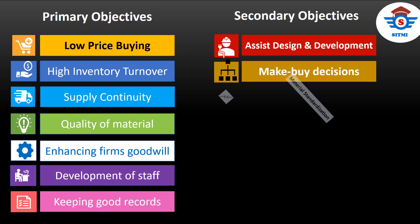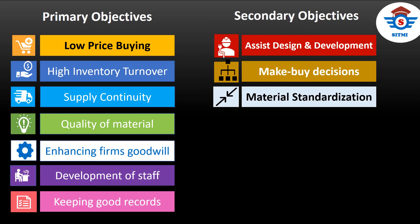An important secondary objective is to ensure material standardization. Manufacturing organizations deal with multiple parts — sometimes parts with very similar specifications differ due to features like design, color, or material, and standardization fails. Even where different part numbers are necessary, there is always scope for standardization and simplification through material coding, storage, assembly planning, combining requirements of similar sub-assemblies, and opportunities in value analysis and value engineering.